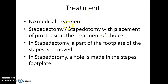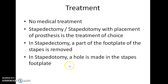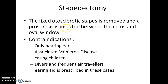What is the treatment for Otosclerosis? There is no medical treatment. Stapedectomy or stapedotomy with placement of a prosthesis is the treatment of choice. In stapedectomy, a part of the footplate of the stapes is removed, whereas in stapedotomy, a hole is made in the stapes footplate. The fixed otosclerotic stapes is removed and a prosthesis is inserted between the incus and oval window.